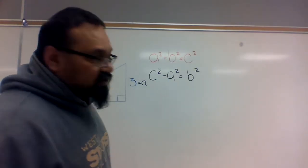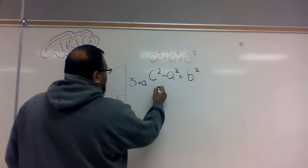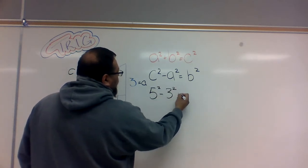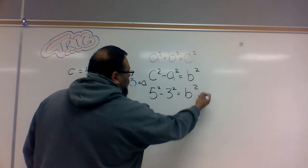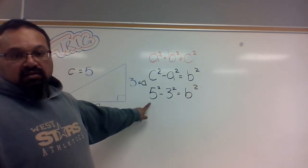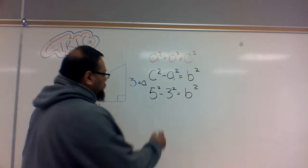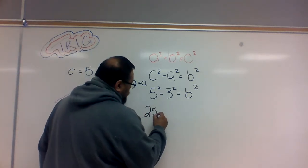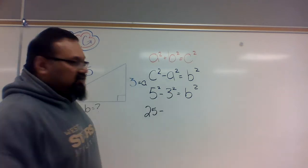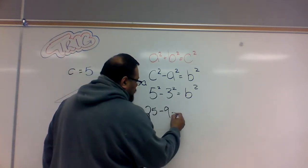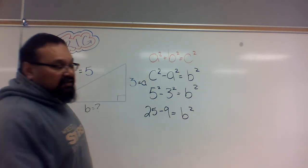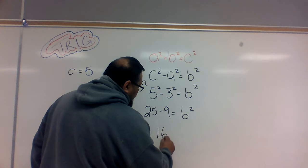Now we plug in our known values. 5 squared minus 3 squared is going to equal B squared. Now we do the math. 5 squared is the same as saying 25, minus 3 squared is the same as saying 9. When I do the math, 25 minus 9 is going to give me 16.